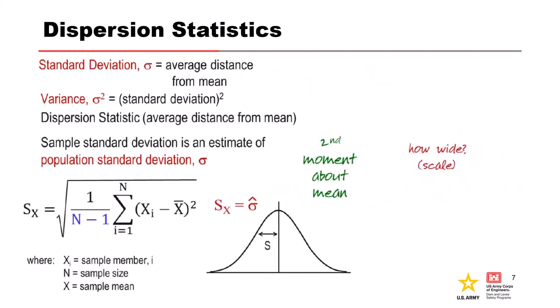Standard deviation is the average distance from the sample mean. A change in standard deviation makes the PDF narrower for a smaller standard deviation or wider for a larger standard deviation.